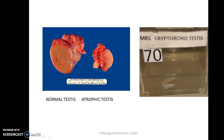From the examiner's point of view, I can ask you: what is atrophy? Atrophy is a decrease in size of the organ due to decrease in number of cells. Then I can ask you the causes of atrophy — they can be physiological atrophy and pathological atrophy.